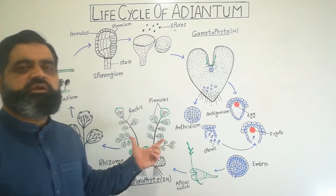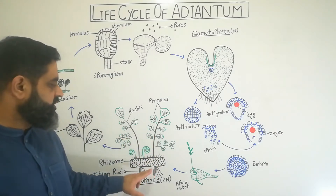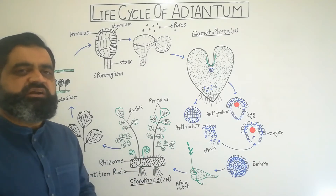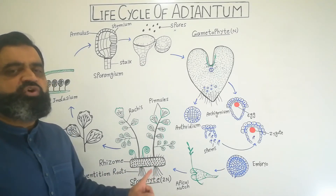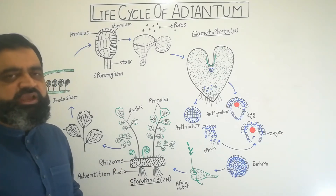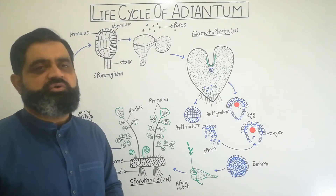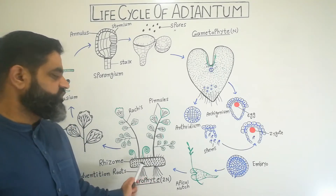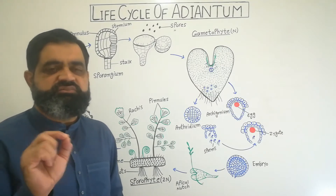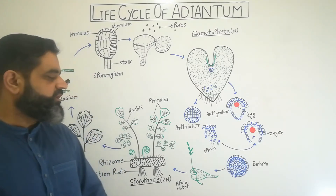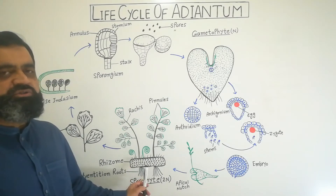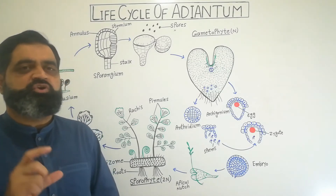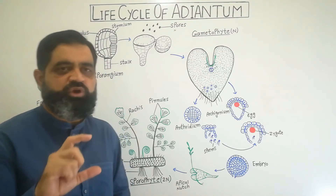First we will look at the stem of Adiantum, which is usually underground. The stem of Adiantum is known as the rhizome. Such a stem which is underground is known as a rhizome. This rhizome is brownish in color and contains scales on it — small leaf-like scales known as ramenta. From this rhizome, which is the underground stem, arise root-like structures. These roots are different from regular roots.